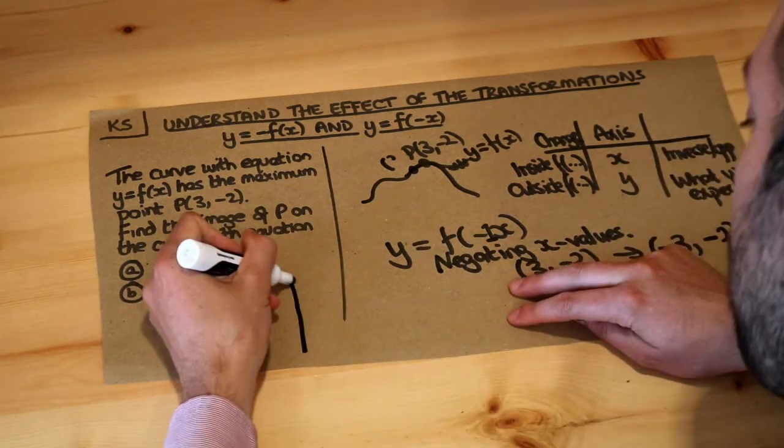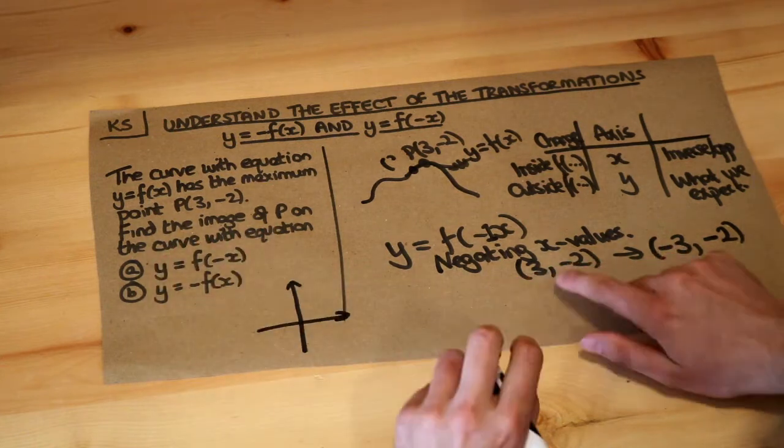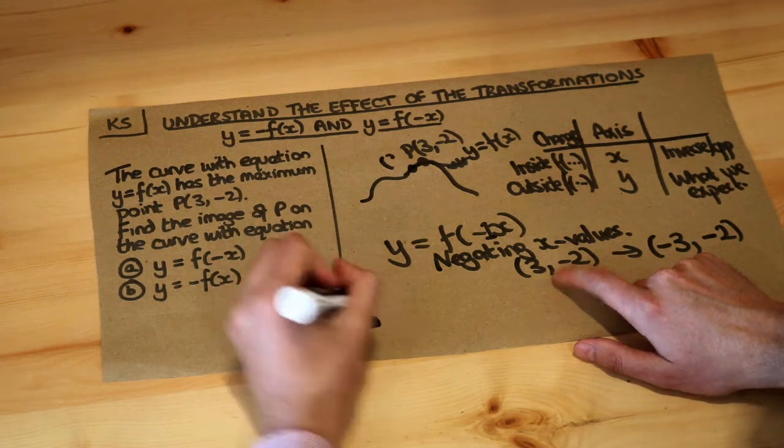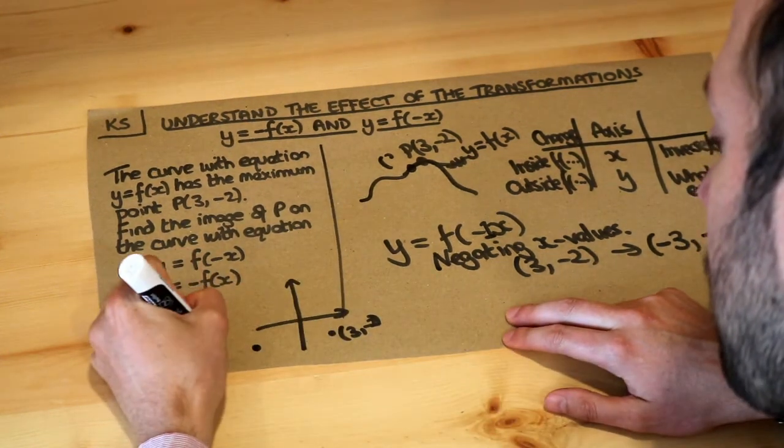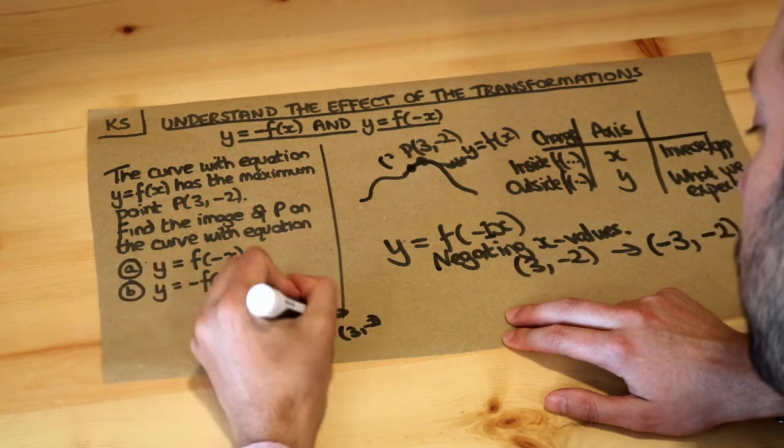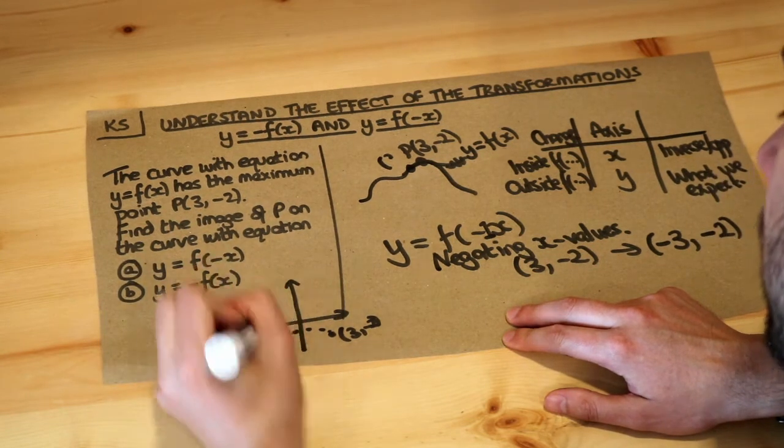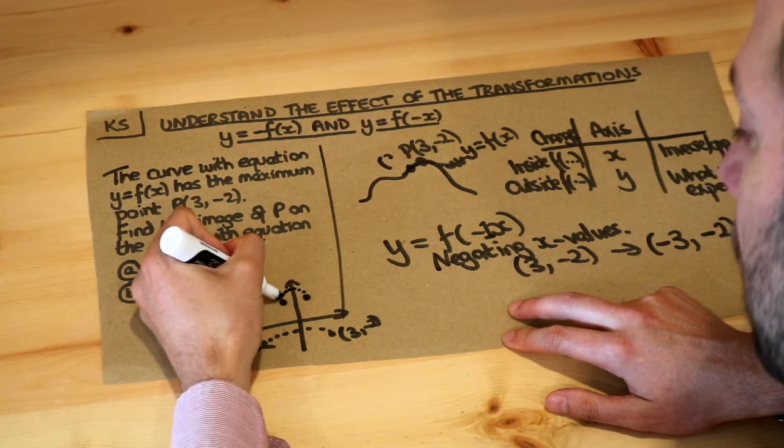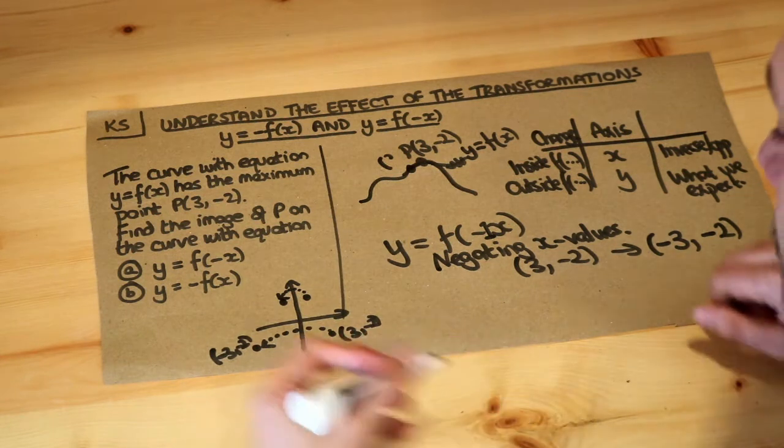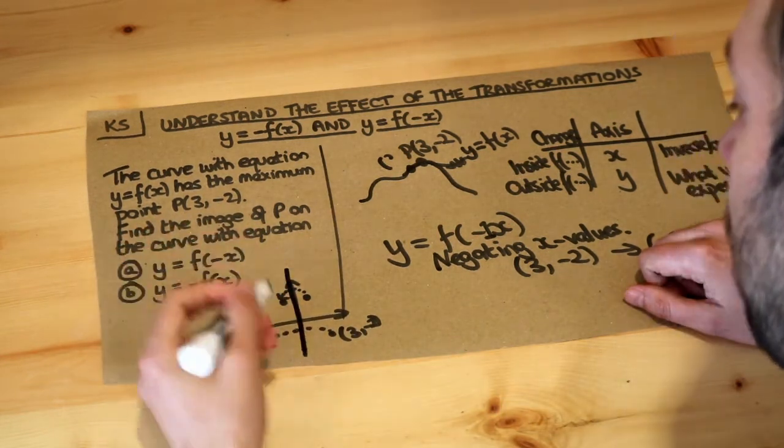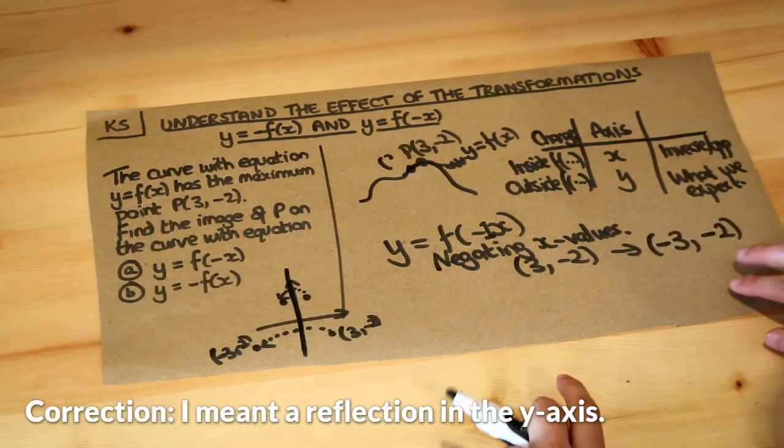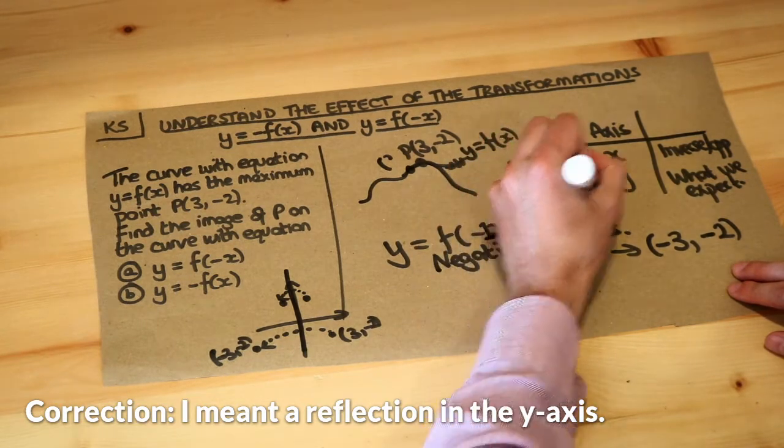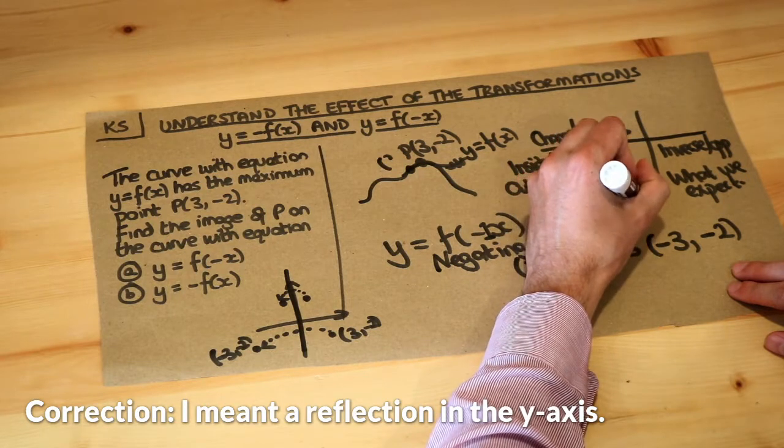Now if we were to draw the effect of that, the (3, -2) is like here and the new point is (-3, -2) which is over here. So that point is becoming that point, and if I had say a point here that would then, if we're negating the x value, that point would then become here. Can you see what the transformation is here? We're actually reflecting it in the y axis. So this has the effect of reflecting in the y axis.